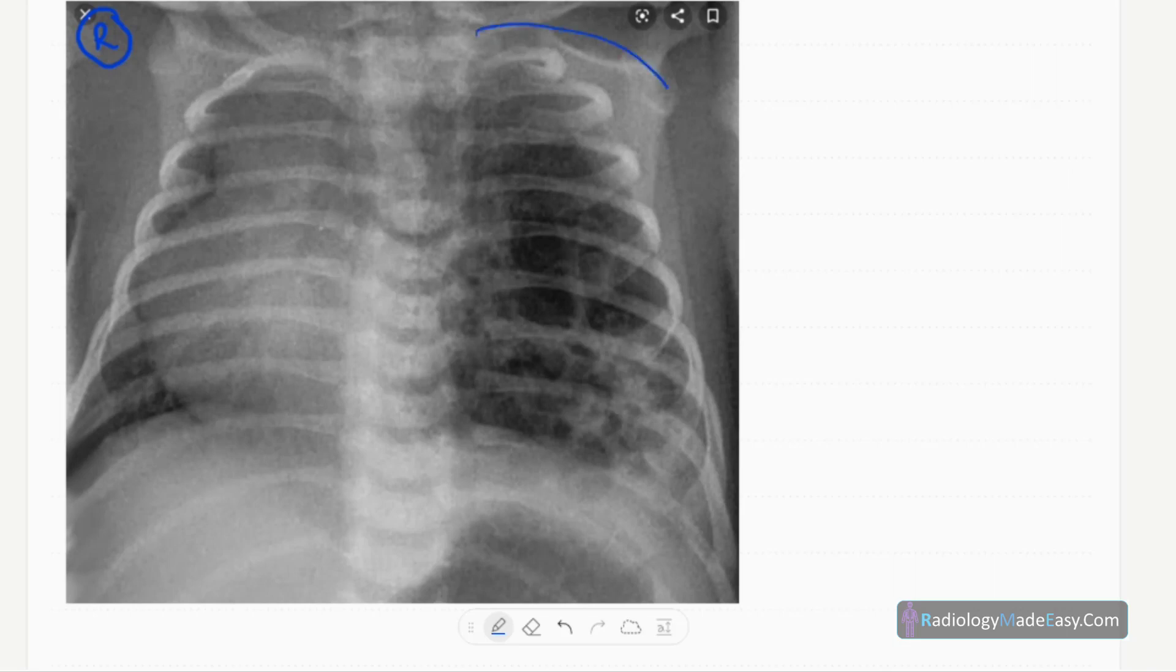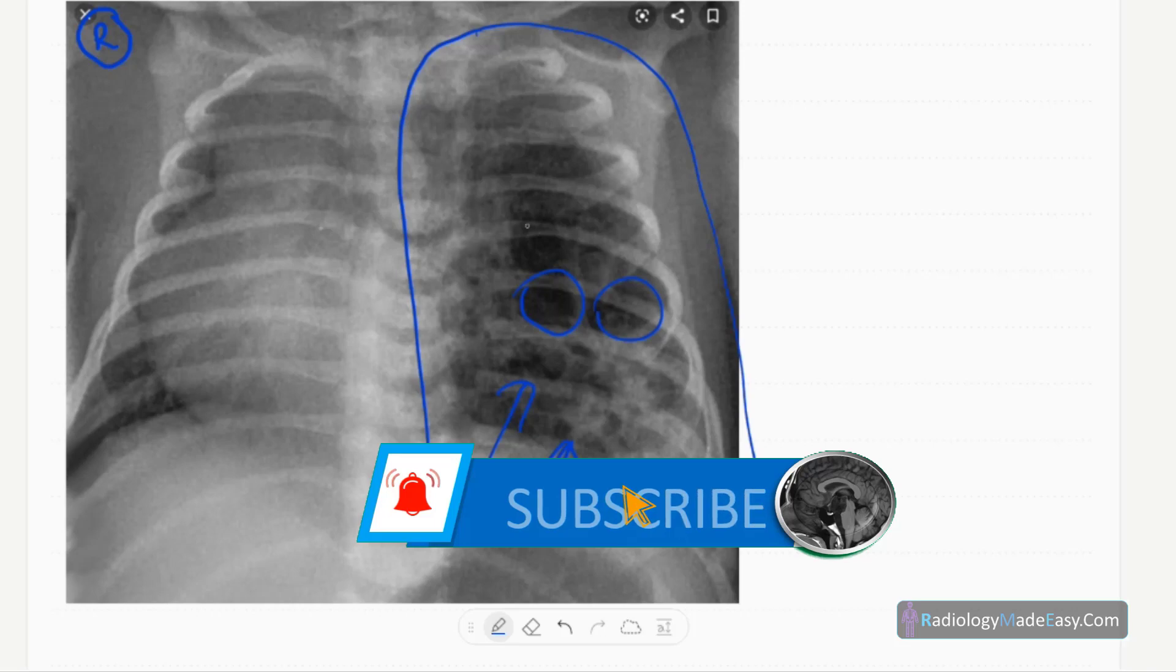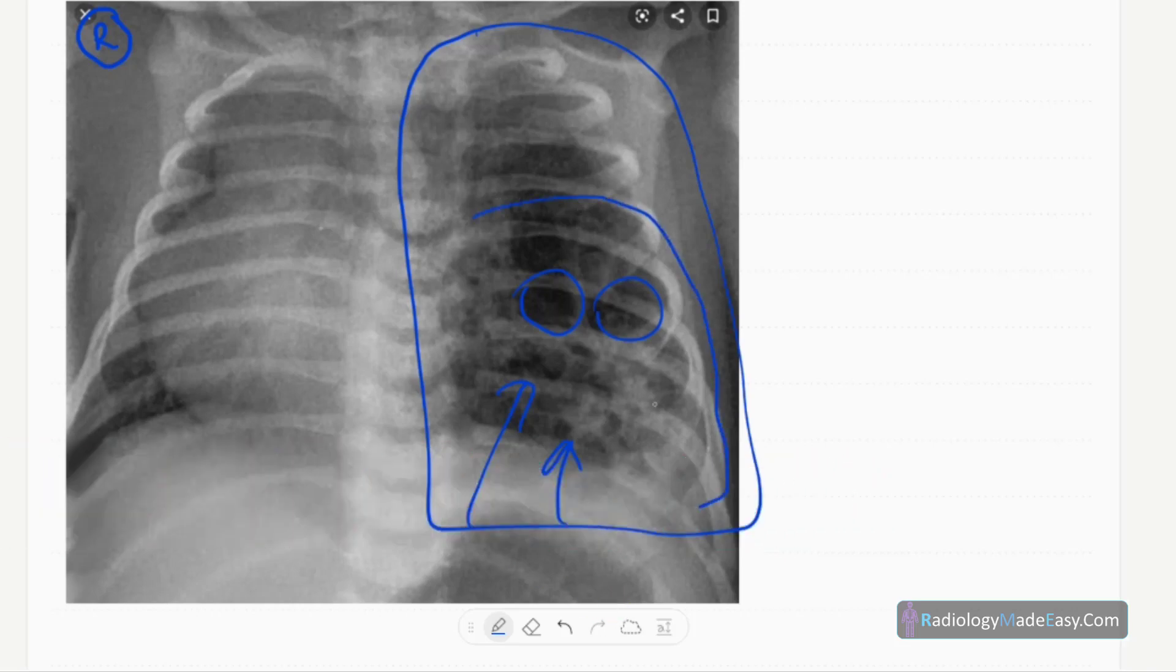You can see the abnormality in the left lung. There are multiple rounded thin-walled lucencies projected over the left mid and lower zones.